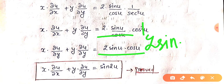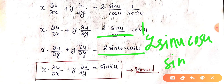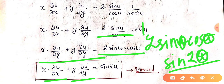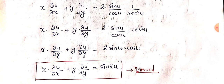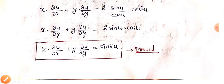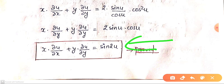Now using the trigonometric identity: 2 sin(u) cos(u) equals sin(2u). Therefore, x times ∂u/∂x plus y times ∂u/∂y equals sin(2u), which is what we had to prove. Hence proved.